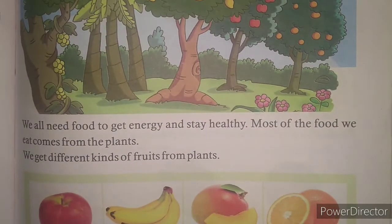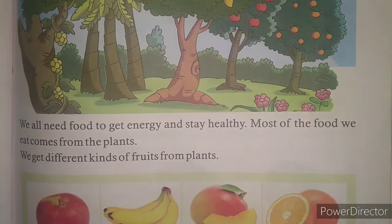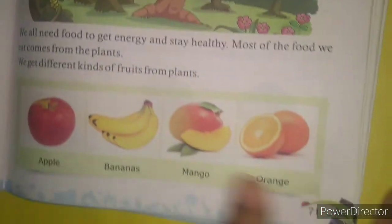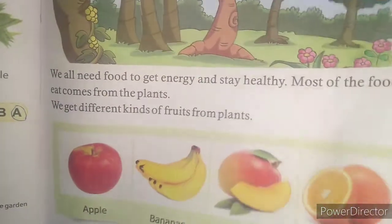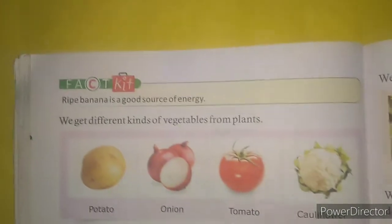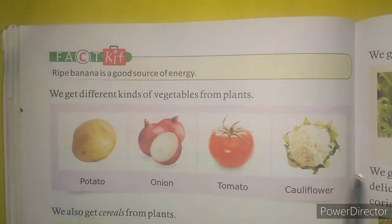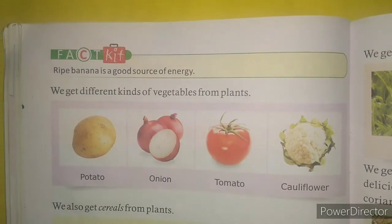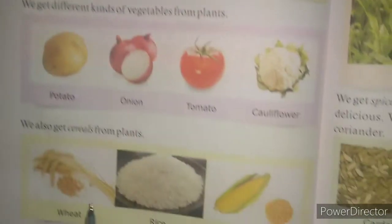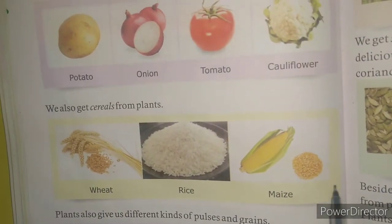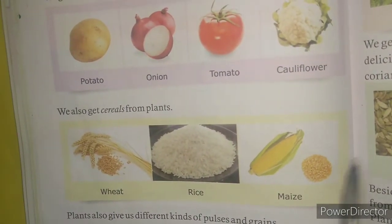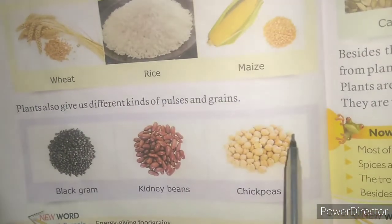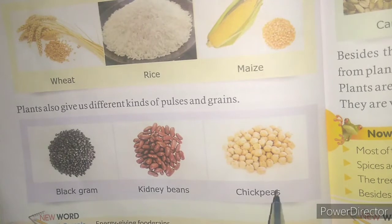We get different kinds of fruits from the plants. Then we get vegetables also from the plants. We eat dal, chawal, cereals — these also we get from the plants. Pulses and grains also come from the plants.